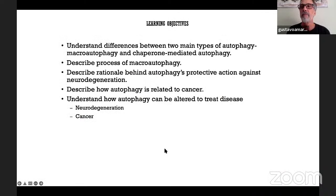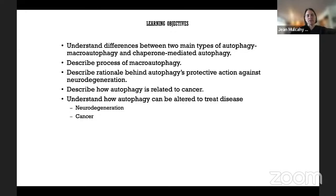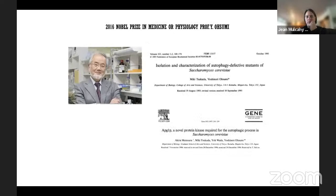Let's get started. Here are the learning objectives we'll come back to at the end. We'll understand the differences between the main types of autophagy — macro autophagy and chaperone mediated autophagy — understand the process of macro autophagy, discuss autophagy's protective mechanisms against diseases such as neurodegeneration, explore the relationship between autophagy and cancer, and understand how autophagy can be altered to treat diseases.